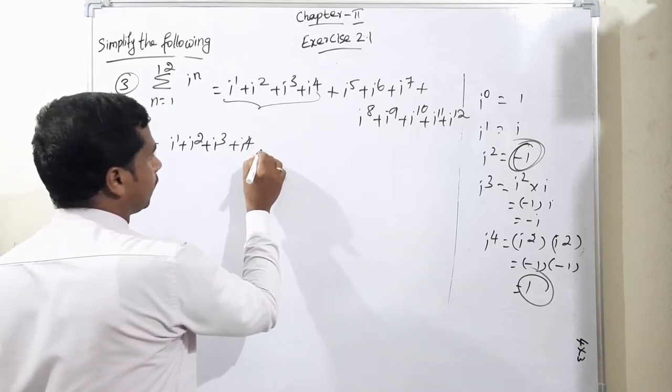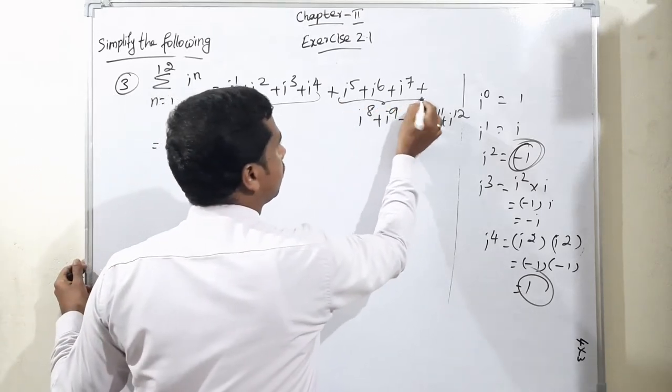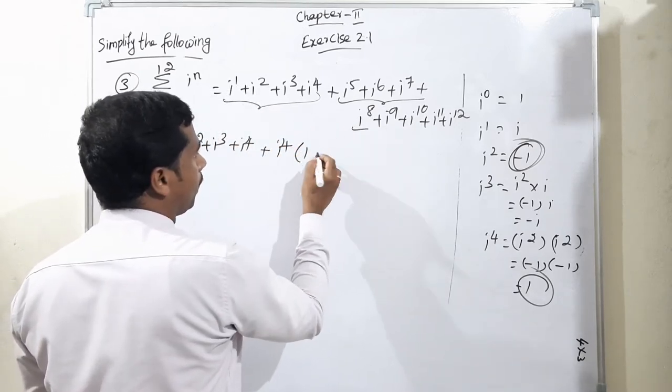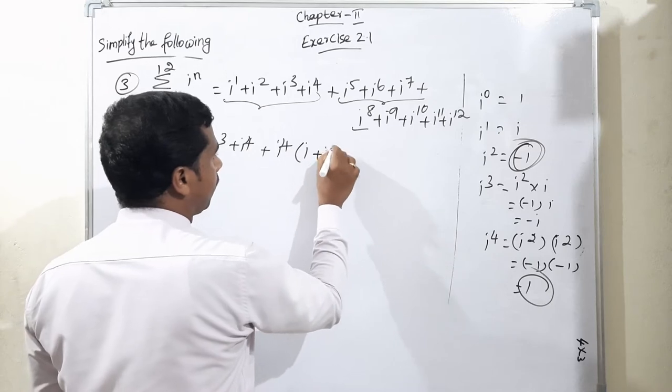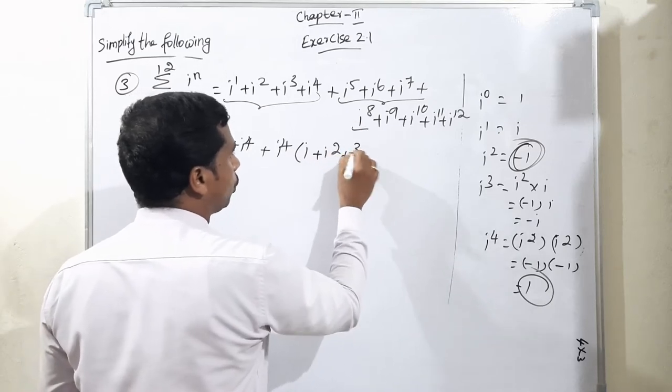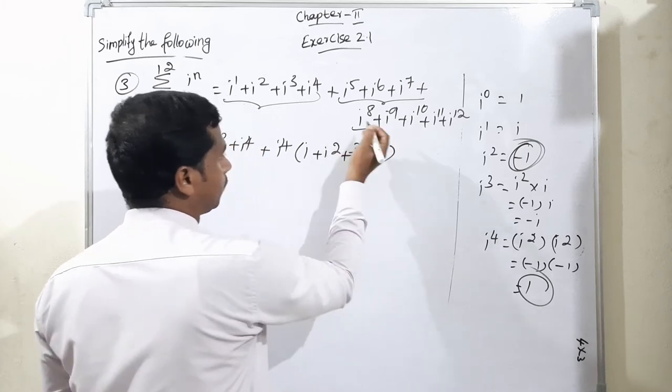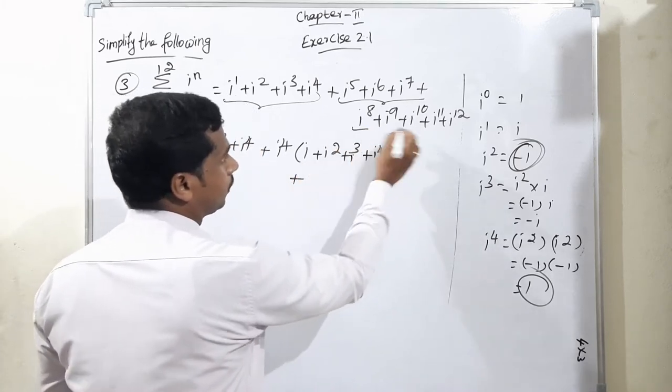Next, we take i to the power 4 as common. Similarly for the last group.